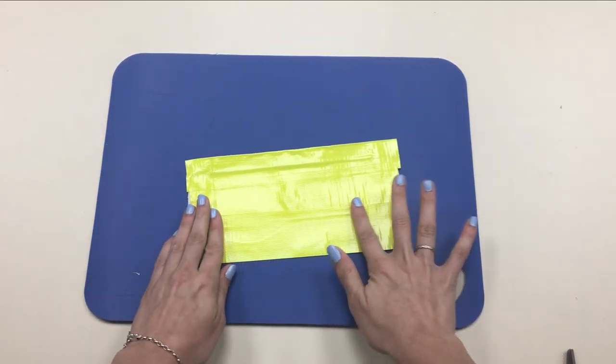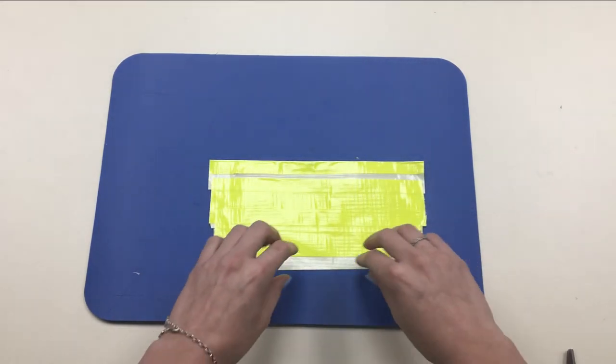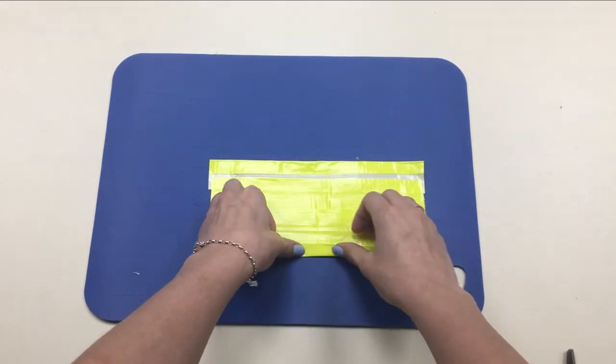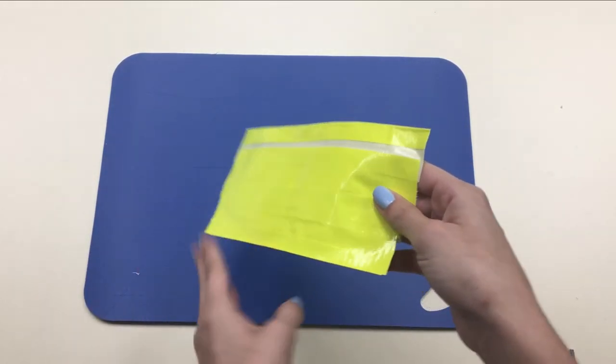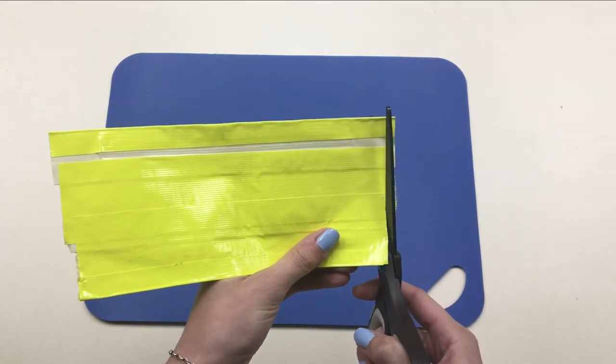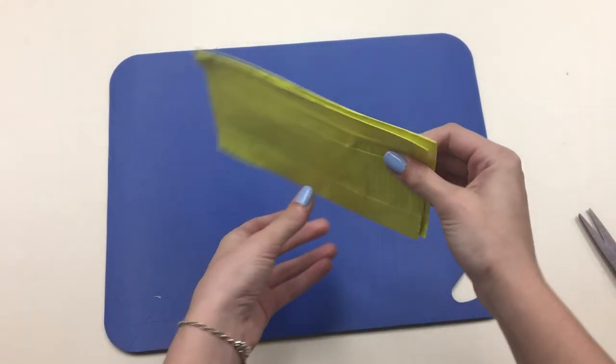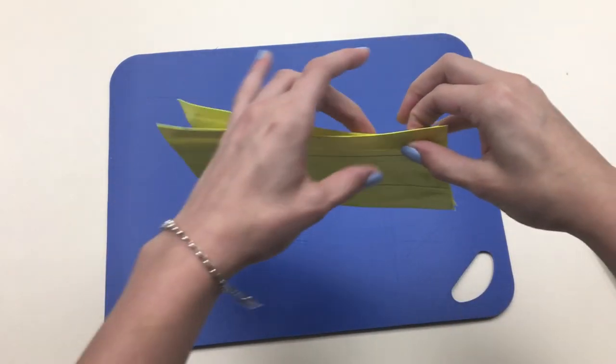Once you have it at the length you want, turn it around and fold up the bottom edge sticky piece. You will want to cut your edges so they are nice and straight. Ask a parent for help. Then, once you are done, do the other side and stick the two pieces together.